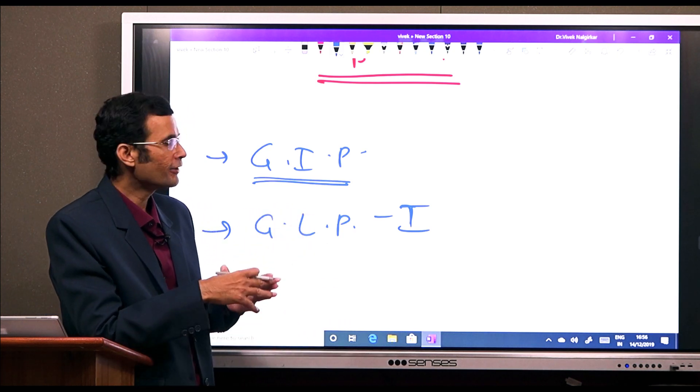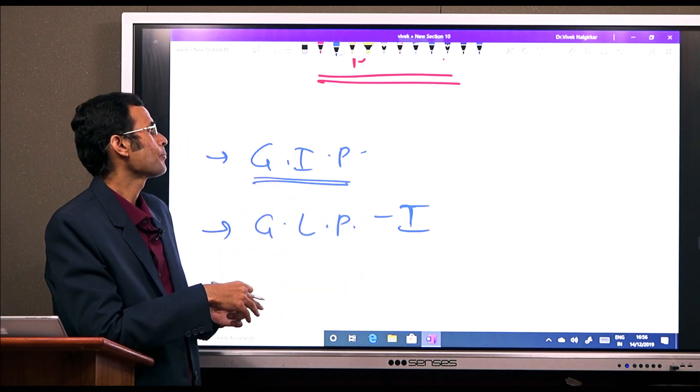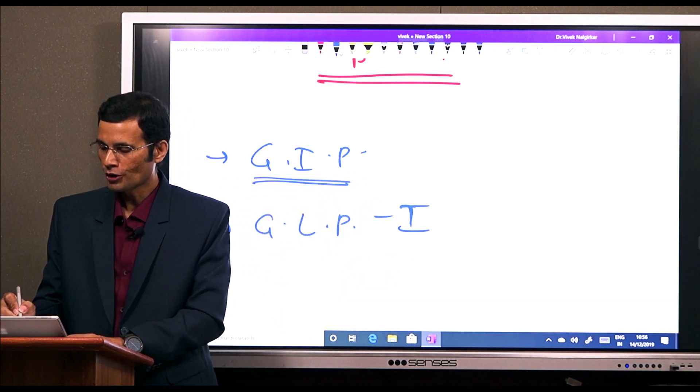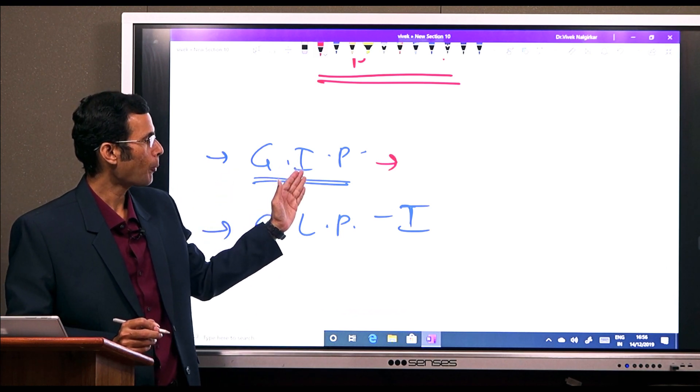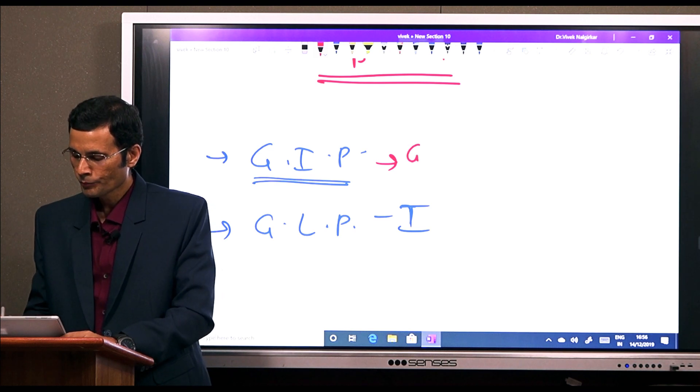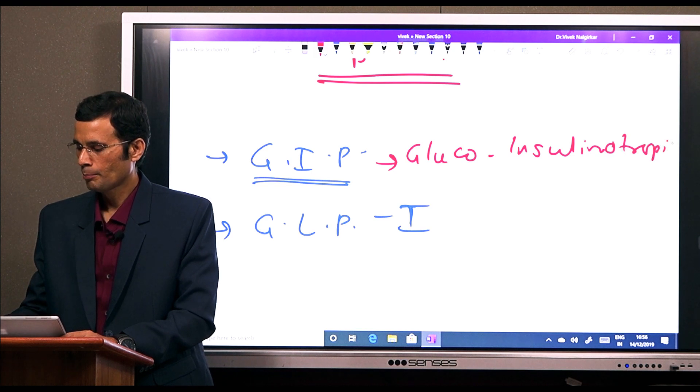But this GIP is known to have this incretin effect. And therefore, this peptide, which was previously called gastric inhibitory peptide, is now called glucose-dependent insulinotropic peptide or simply gluco-insulinotropic peptide.